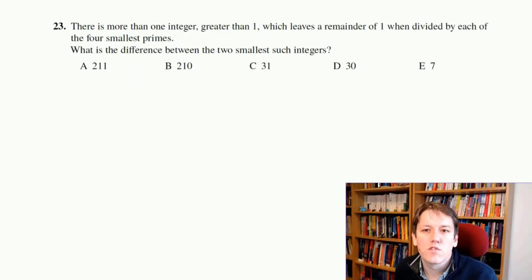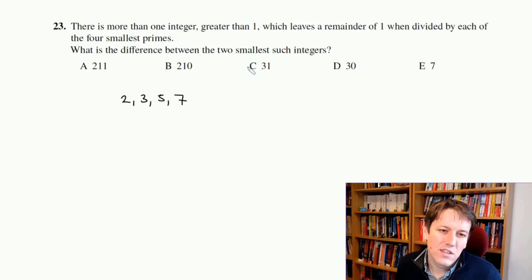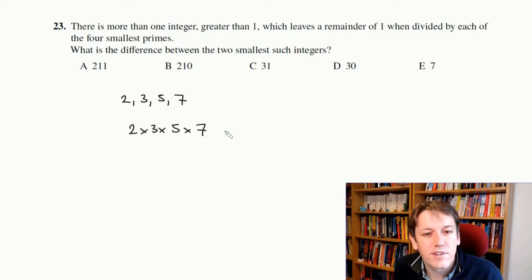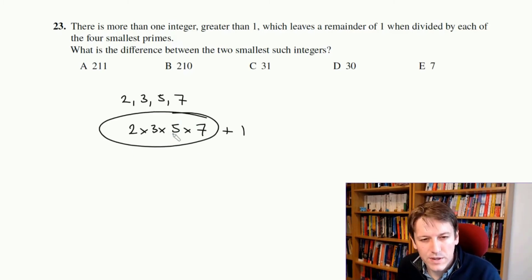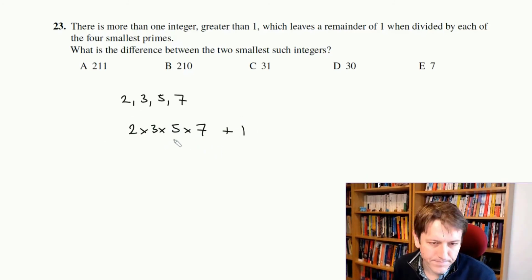Question 23, it says, there's more than 1 integer greater than 1 that leaves a remainder of 1 when divided by each of the 4 smallest primes. So we need to remember what those are. That's 2, 3, 5, and 7. Remember, 1 is not a prime. And it says, what's the difference between the two smallest such integers that leave a remainder of 1 when divided by each of these? So because these numbers don't have anything in common, the smallest number this is going to be true for is 2 times 3 times 5 times 7 plus 1. You see that if I divide this number by 7, this bit is a multiple of 7, so I get an exact division when dividing that by 7. So if I add 1 to it, then I'd get a remainder when dividing by 7. And you can make that argument for 2, 3, and 5 as well. If I divide it by 2 here, this is an exact multiple of 2, so I'll just get this as the remainder. So that's how we'd construct this. 2 times 3 times 5 times 7 is... 6 times 5 is 30 times 7 is 210. So this is 210 plus 1, which is 211.